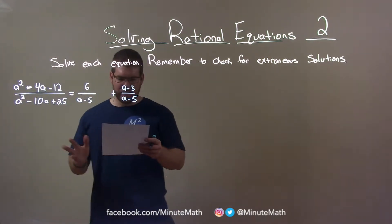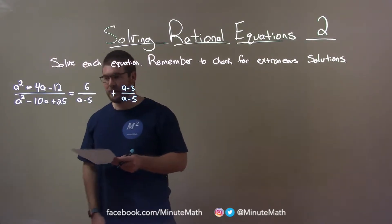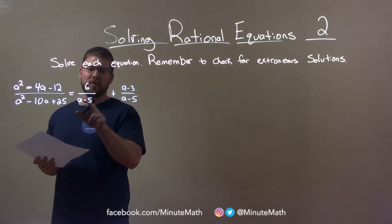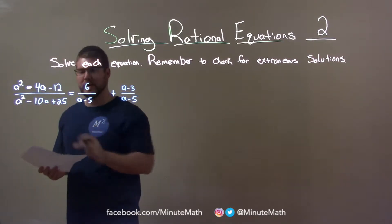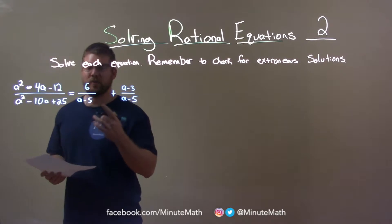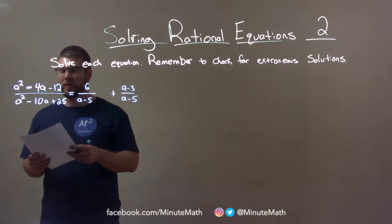This one's a little tricky. There's a few ways to go about it. Part of me looks ahead and sees that we have a minus 5 here, and maybe if I can get this right there. I know a minus 5 times a minus 5 will equal that a squared minus 10a plus 25.